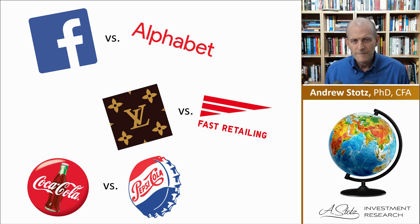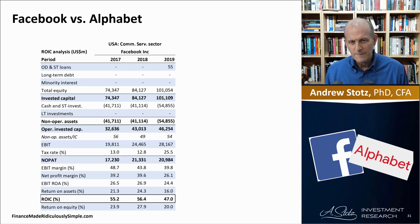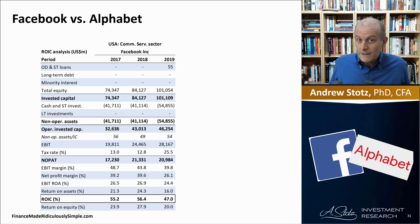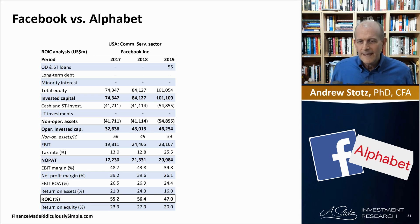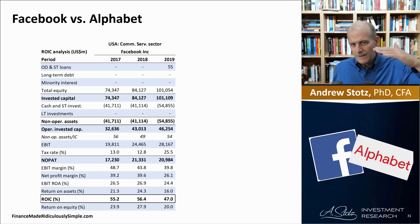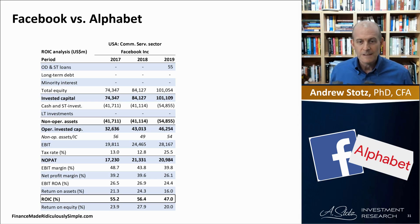Let's look at Facebook versus Alphabet. Facebook has operating invested capital in 2019 of $46 billion. Their total equity is $100 billion, but they have $54.8 billion in cash, meaning the operating invested assets are basically half the equity. There's no debt, which causes the operating invested capital to come down very low. With an EBIT margin of about $39.8 billion, Facebook is producing almost a 50% return on invested capital.